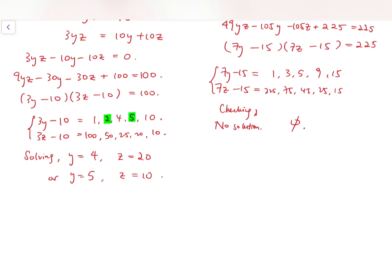So that means, therefore, our final solutions are just two pairs: 2, 4, 20, and 2, 5, 10, of course, and its permutations.